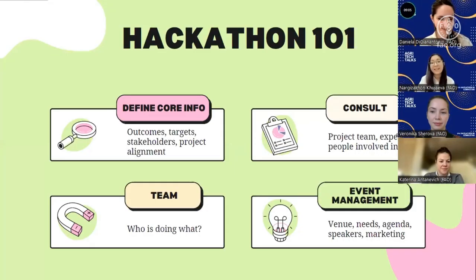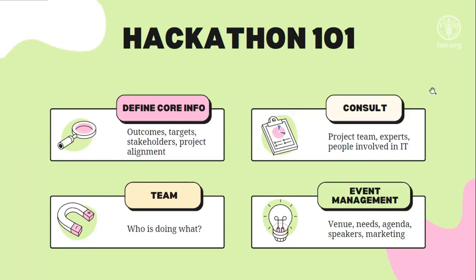That's a really good question. Here's a visual representation of the main steps involved in organizing a hackathon — that's how we did it here in the country office. The first and crucial step is to define the core information about your hackathon. It is the initial planning stage, and we want to get all the details right to ensure we're not missing anything. For that, we start by mapping out the project outcomes, putting our targets together, and also having stakeholders on our information sheet to make sure everything aligns with the project.